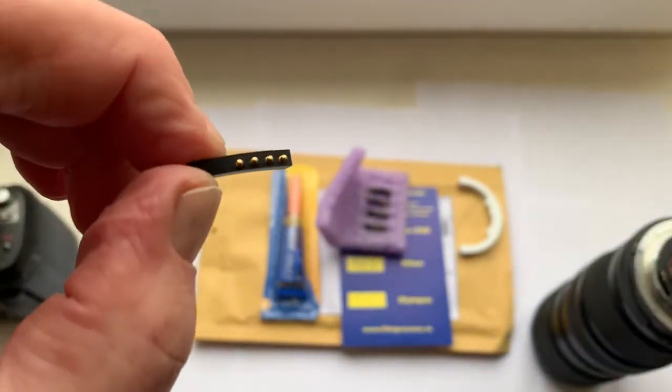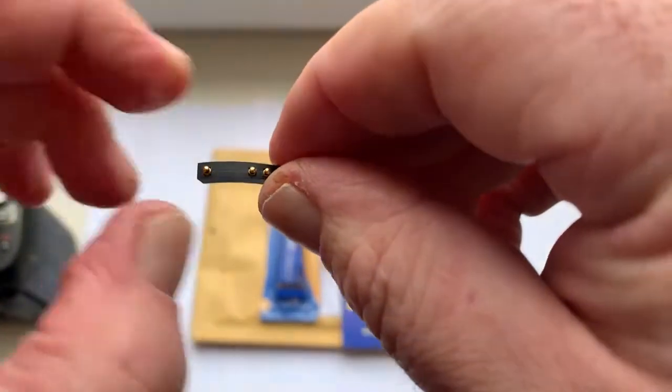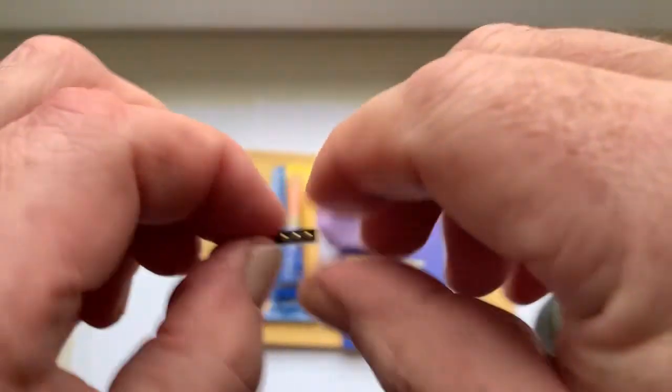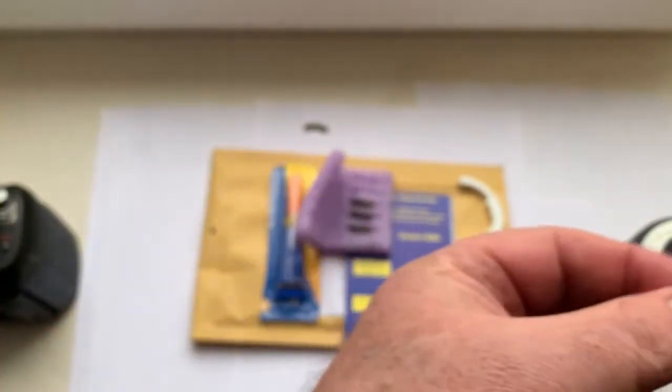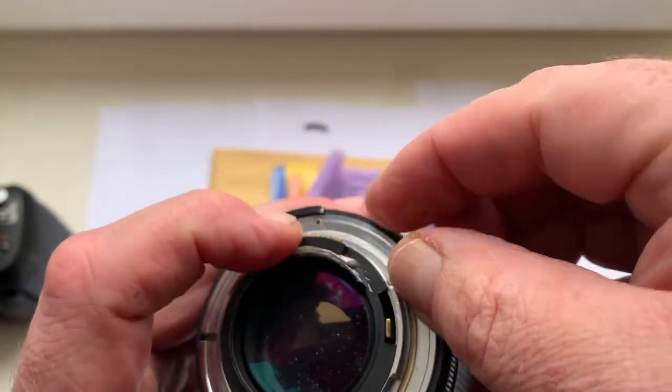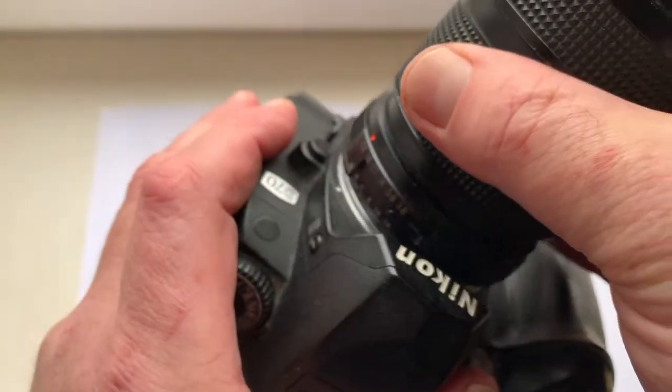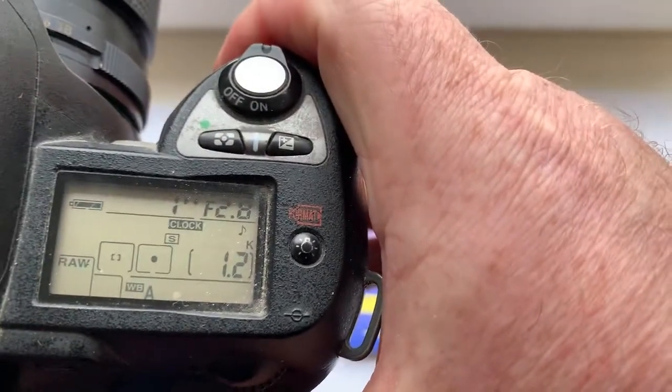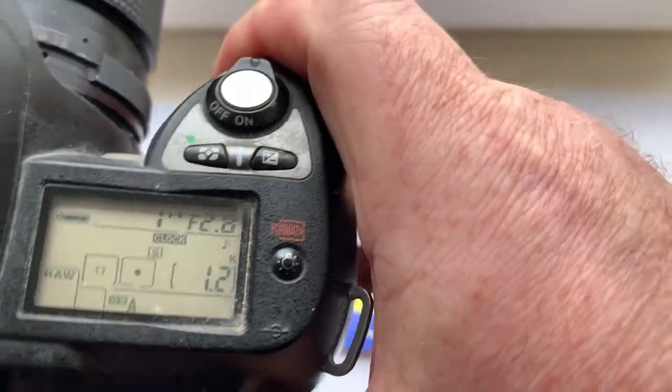The chip number one: full rocket, full pre-programmed, not damaged. The chip number two: aperture 2.8, focal length is 45 millimeter.